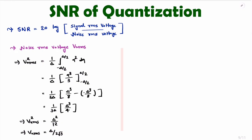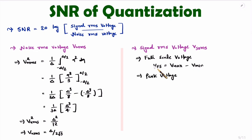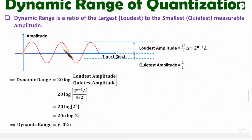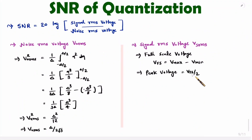Now let us understand signal RMS voltage. You need to understand a few basics. First, the full scale voltage VFS equals Vmax minus Vmin. The peak voltage is half of the full scale voltage. If you consider a sinusoidal signal, the peak will be half of full scale, so peak voltage equals VFS divided by 2.